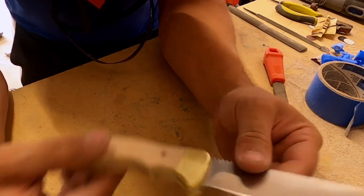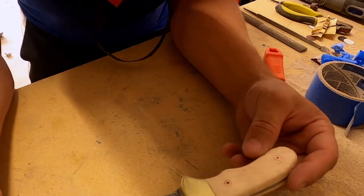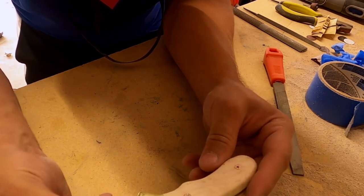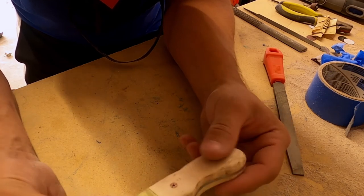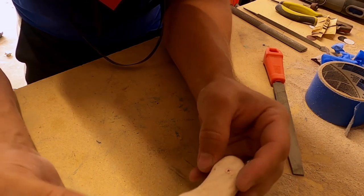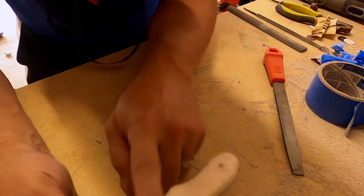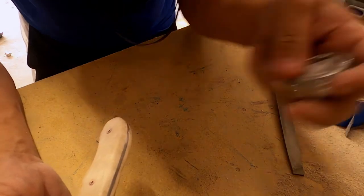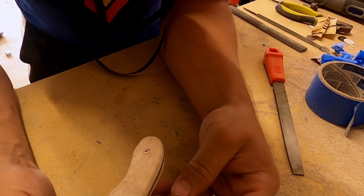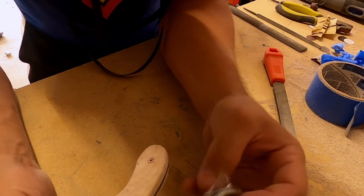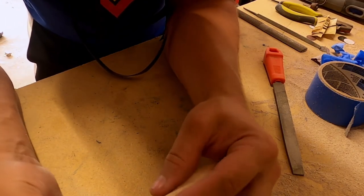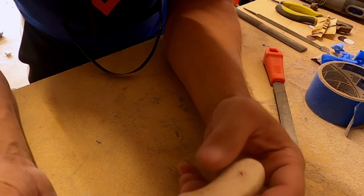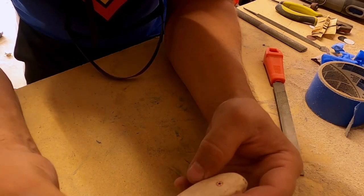All right, so there we have it, guys. That is the Man's Best Friend DIY knife kit from ManCrates. This is gonna be almost the finished product. This is where I'm gonna end this series, but I'm gonna polish up this brass. It does come with a wood finish that I will probably put on in the future, but for now I'm very pleased with how it turned out.